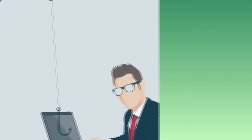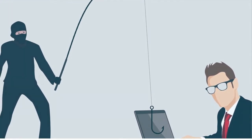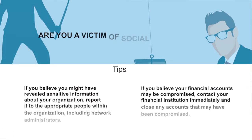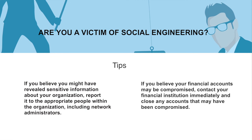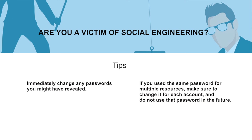Now let us discuss what to do if you think you are a victim of social engineering. If you believe you might have revealed sensitive information about your organization, report it to the appropriate people within the organization, including network administrators, so they can be alert for any suspicious or unusual activity. If you believe your financial accounts may be compromised, contact your financial institution immediately and close any accounts that may have been compromised. Watch for any unexplainable charges to your account. Immediately change any passwords you might have revealed, and if you use the same password for multiple resources, change it for each account and do not use that password in the future.